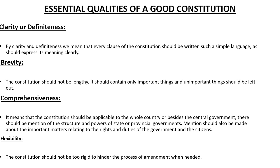Essential qualities of a good constitution: First, the constitution should be clear and definite. It means every clause of the constitution should be written in a simple way, as it expresses its meaning clearly. Second, it should be concise and not lengthy; it should contain only the important things. Third, it should be comprehensive, which means it should clearly set out the upper and lower limits of government authority, the duties and responsibilities of the state, its functions, and the power and function of all departments of the government.